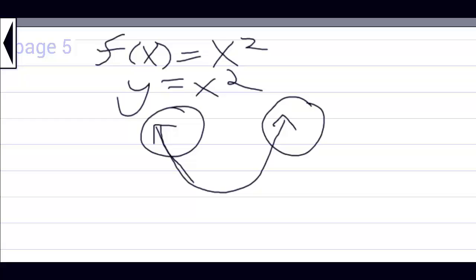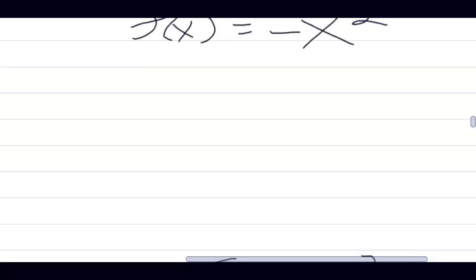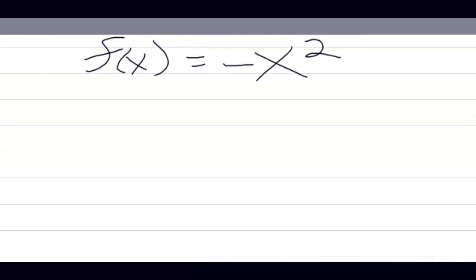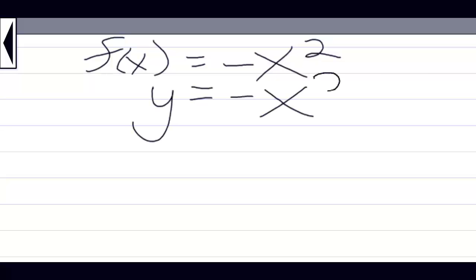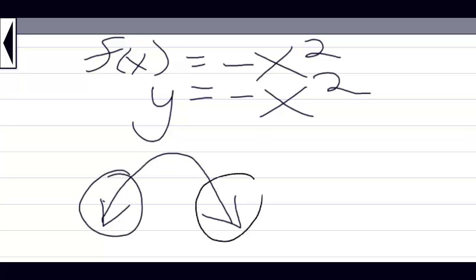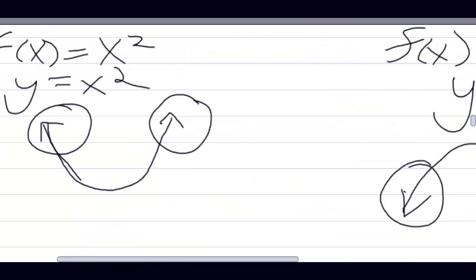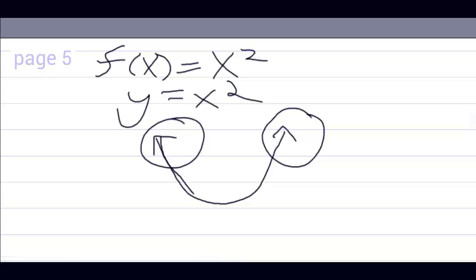Now let's look at y = -x², or f(x) = -x². It looks like this — it's a tipped down, or reflected parabola. This is the end behavior of y = -x². You need to memorize the end behaviors of both y = -x² and y = x².